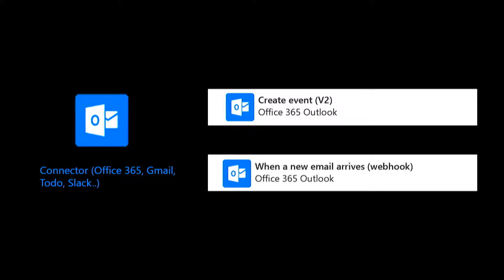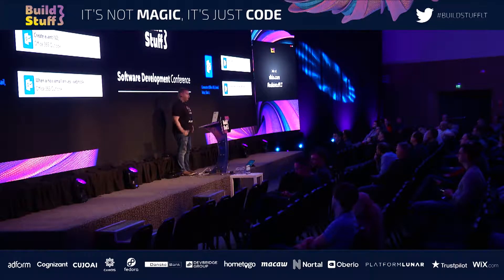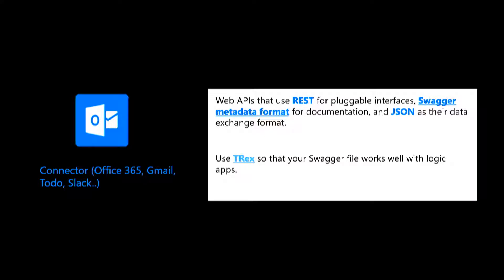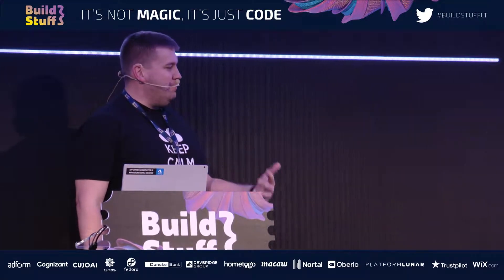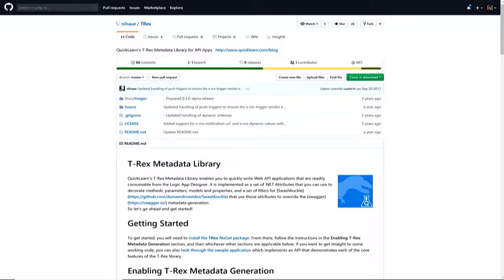A connector has triggers and actions. Behind triggers and actions are REST APIs. Anything that has a REST API decorated with Swagger metadata or OpenAPI format and talks JSON can be presented as a Logic App. We even have an open source platform called the T-Rex metadata library that helps you build APIs to work well with Logic Apps. I can show you how you can use Logic Apps for your own products and add them into the workflow engine.